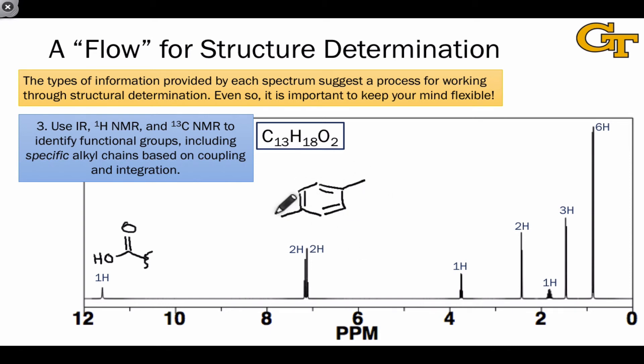We can use the coupling properties and coupling constants and even two-dimensional spectra to sort out the alkyl region and identify specific alkyl groups. I won't go into this in too much detail here, except to say that what we can glean from this is that there should be an isobutyl group within the structure somewhere, and a methyl group connected to a methine somewhere in the structure as well.